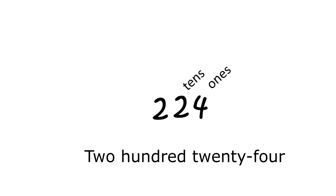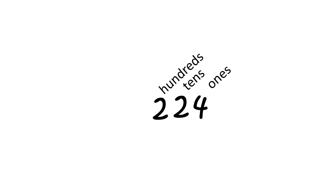Let's add another number 2, and now we read this number as 224. This new digit that we added is in the 100s. So, whenever we see a 3-digit number, we know it's in the 100s.